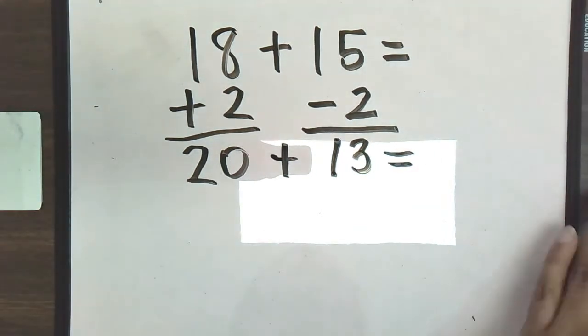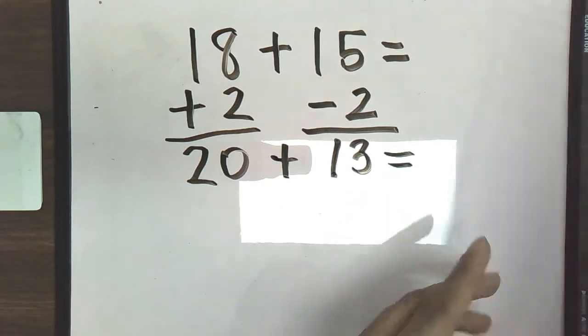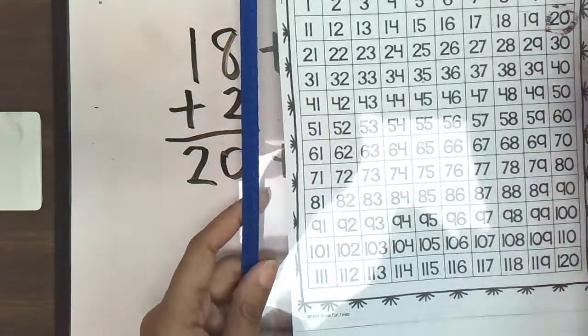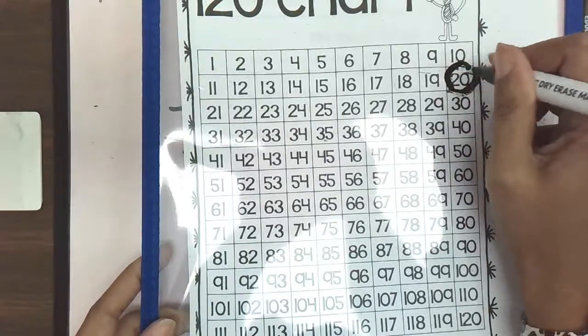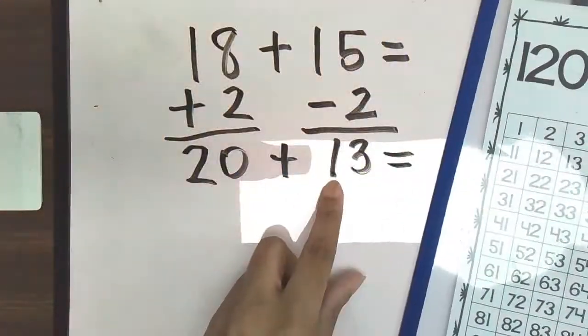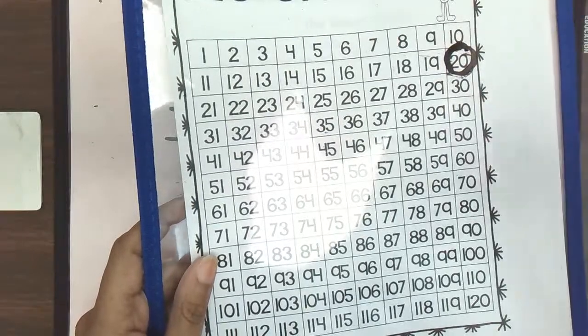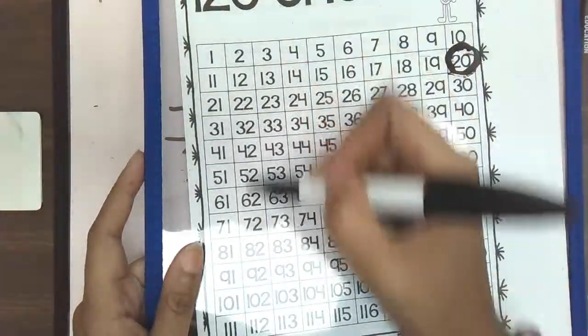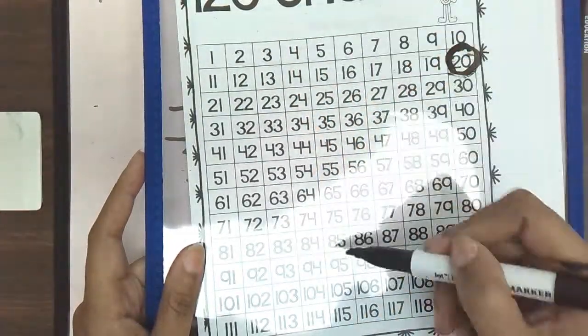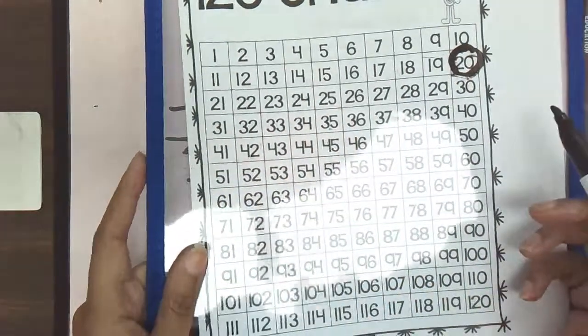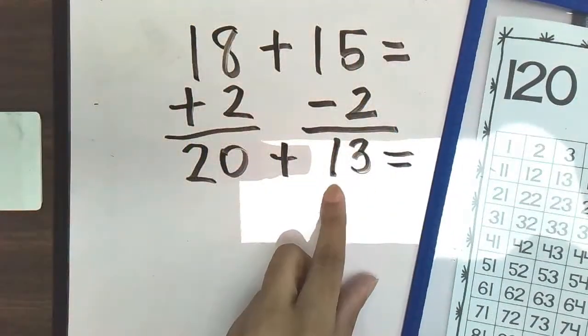The theory is now it's easier to add this 20 plus 13 versus adding 18 plus 15. So again, if we use that 120s chart and we find 20 plus 13, we first find our number 20, which again is going to be right here. And we are adding to that 13. Now we have discussed in class that when we are adding 10, we know that we are going down on our 120s chart. When we are adding one, we know we go over to the right.